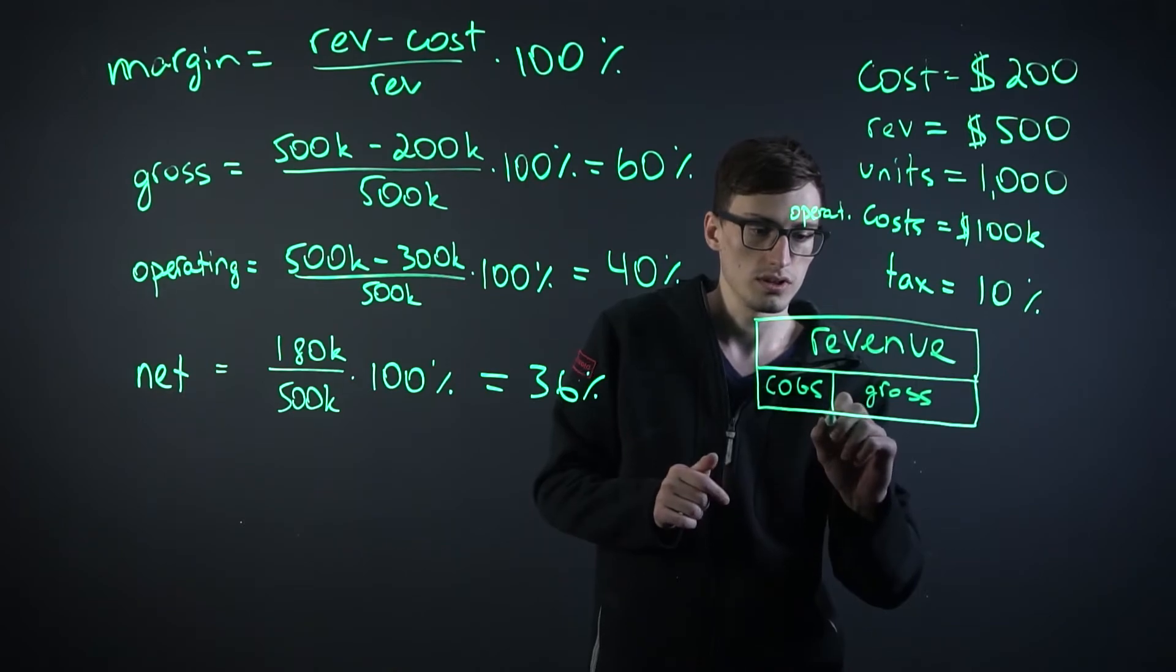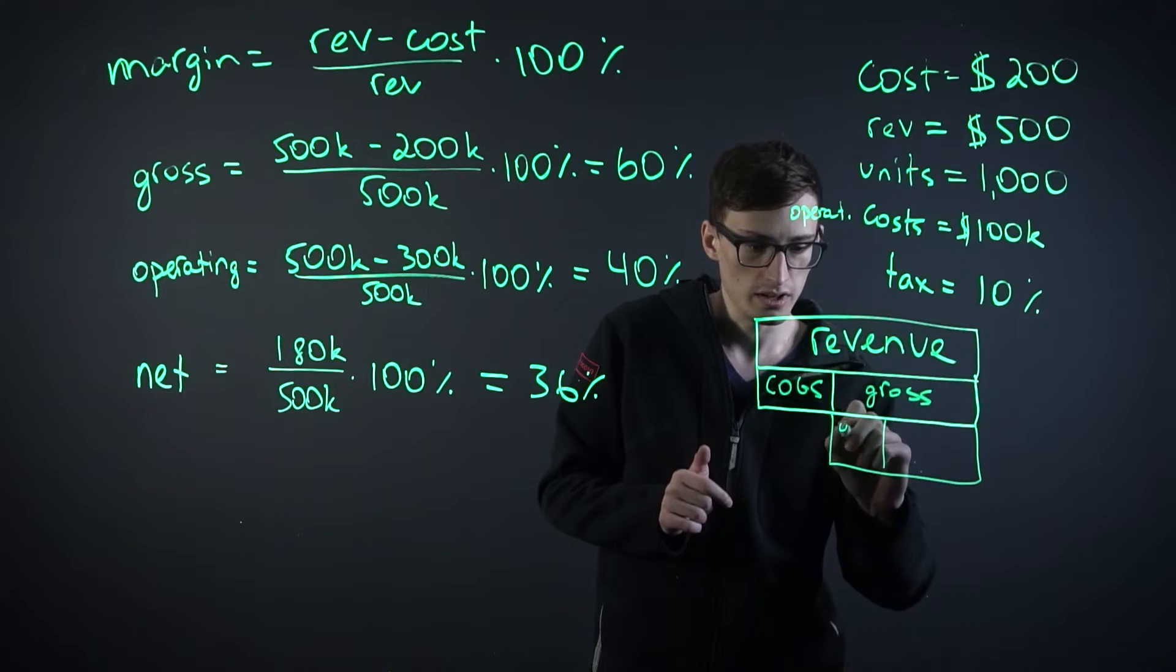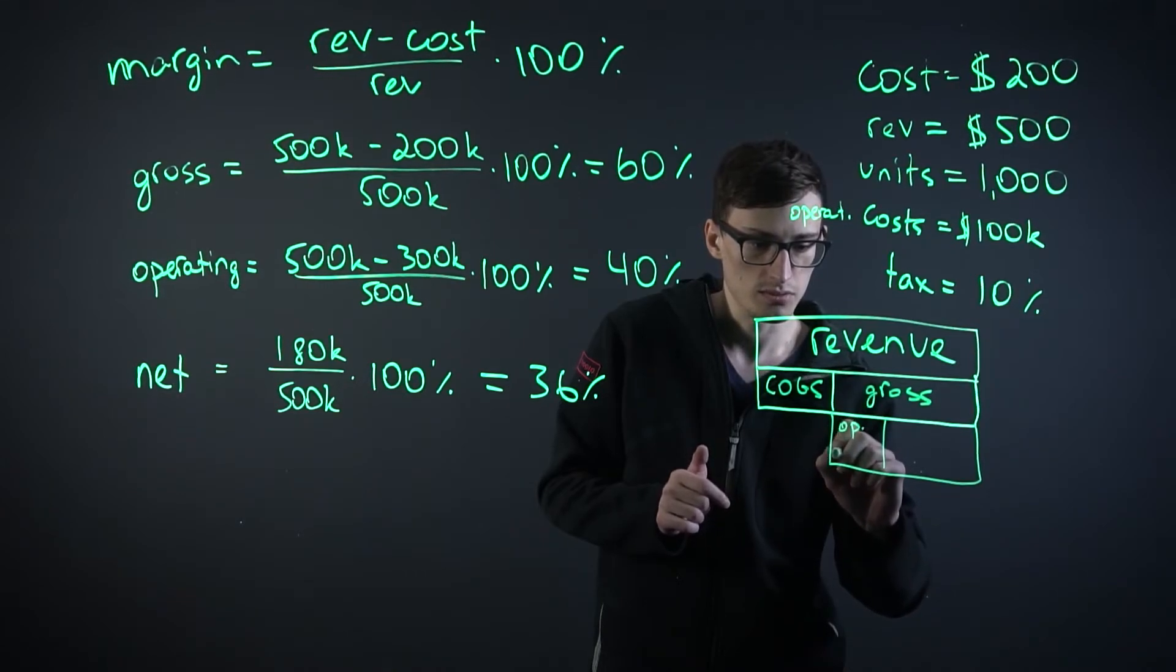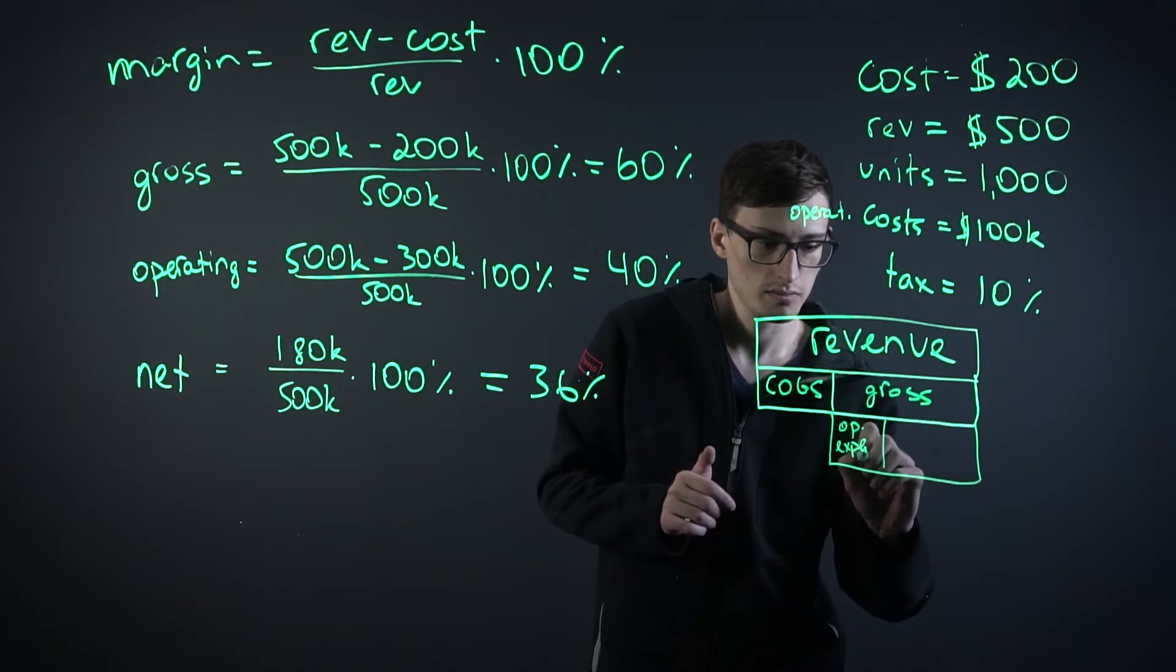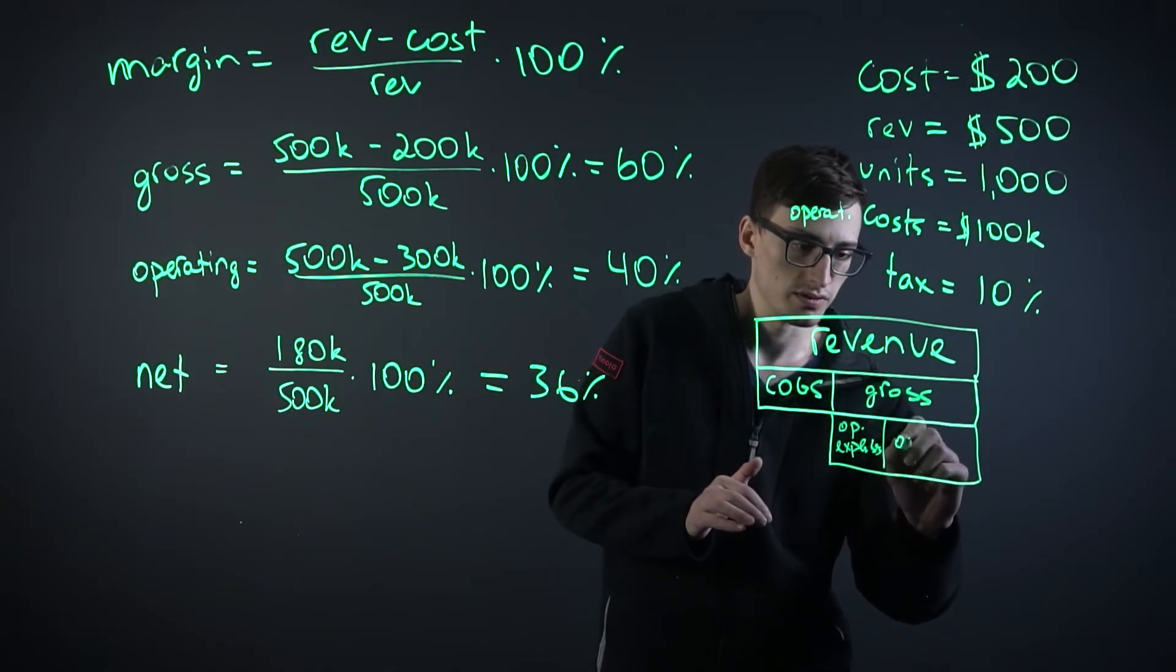And the gross is broken down into two more levels. The operating expenses, and obviously the operating margin right here.